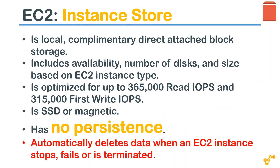There is another type of EBS volume or block storage that Amazon offers called Instance Store. One of the main differences between Instance Store and EBS volumes is it doesn't have any persistence at all. If a server has an Instance Store volume attached and the server goes offline due to a hardware failure and is terminated, every data associated with that Instance Store is gone. It automatically deletes data when the EC2 instance stops, fails, or is terminated.